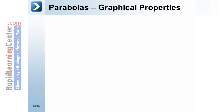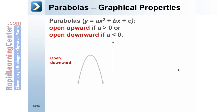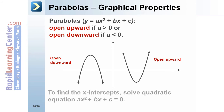Parabolas — Graphical Properties. Parabolas may open upward if a is greater than 0, or downward if a is less than 0. To find the x-intercepts of a parabola, ax squared plus bx plus c, we solve the quadratic equation ax squared plus bx plus c equals 0.